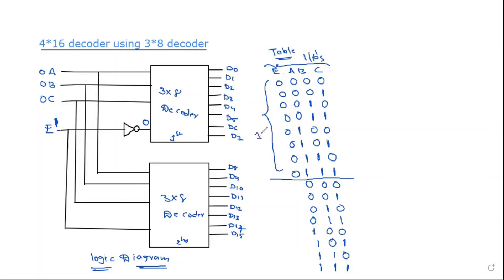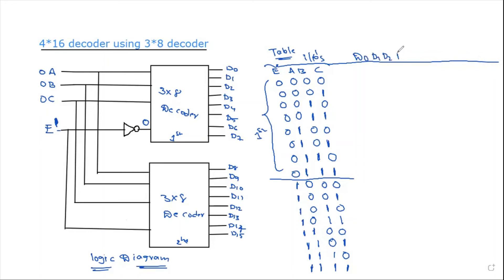The second decoder's enable pin is 1, making the second decoder active. It handles the remaining outputs. The full output sequence is D0, D1, D2, D3, D4, D5, D6, D7, D8 through D15.